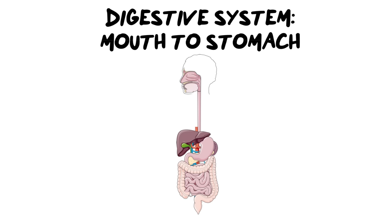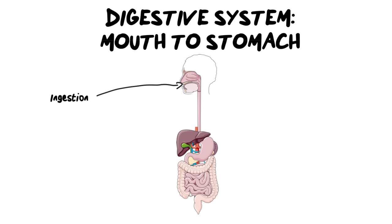First things first, we need to look at the different processes that happen throughout the digestive system, and we're going to start off with the mouth. The mouth is associated with the process of ingestion, which is to take food in, and it includes the teeth, the tongue, the saliva — all of it mixing together. Once food has entered into our digestive system, digestion can happen.